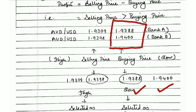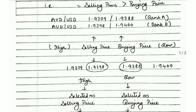The lowest ask rate of 1.9388 is offered by Bank A, so by our thumb rule we purchase the currency from Bank A. Now for the selling price, the bid rate is the selling rate for us. The two available bid rates are 1.9309 (Bank A) and 1.9398 (Bank B).